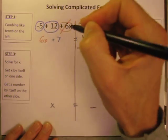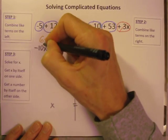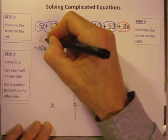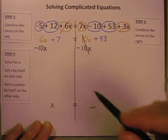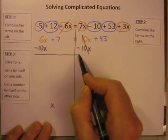Make sure when I write it, I'm going to write it under the 6x. Because 6x and 10x are like terms, I can do 6x minus 10x. I couldn't do 7 minus 10x because those aren't like terms. So what have we got left?